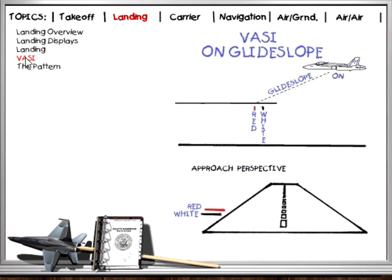The Visual Approach Slope Indicator, or VASI, provides glide slope information to the pilot through a combination of red and white lights positioned near the end of the landing area. The VASI consists of three bars of lights: a downwind bar, a center bar, and an upwind bar. The bottom two bars are used for all tactical aircraft, while the top two are reserved for large transport-type aircraft with higher pilot viewpoints. Generally, the upwind bar should be ignored as far as you're concerned.